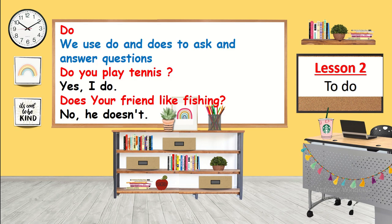We use 'do' and 'does' to ask and answer questions. We can use them in full answers or short answers. For example: Do you play tennis? Yes, I do — that's the short form. Or: Yes, I play tennis — that's the full form. Another example: Does your friend like fishing? No, he doesn't. Or: Yes, he does.